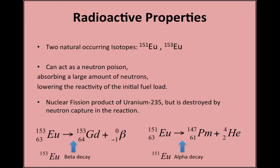Europium also acts as a neutron poison in which it can absorb a large amount of neutrons, resulting in lower reactivity of the initial fuel load. It is also a fission product of uranium-235 but is destroyed because of its role as a neutron poison.